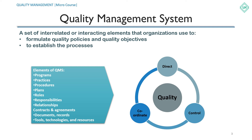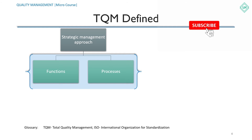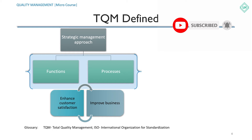Now let us learn about total quality management, or TQM. TQM is the integration of all functions and processes within an organization in order to achieve continuous improvement of the quality of goods and services. The goal is customer satisfaction, and enhanced customer satisfaction will also lead to improved business.